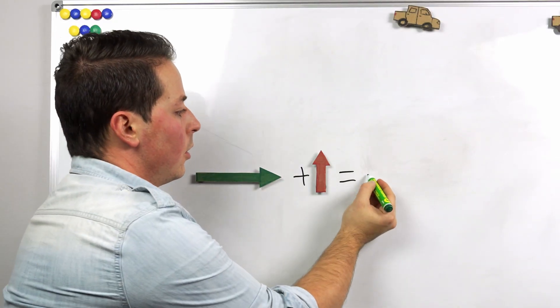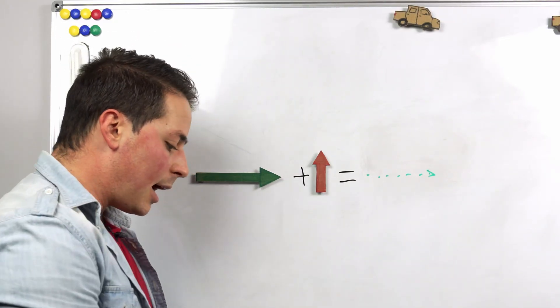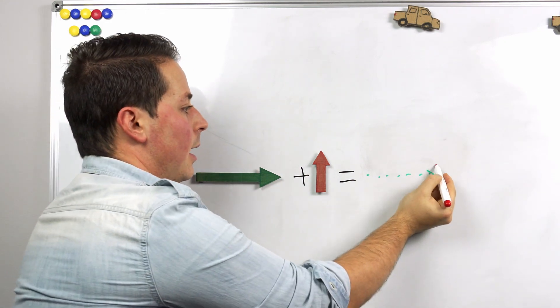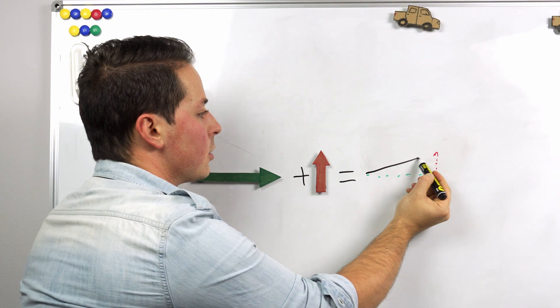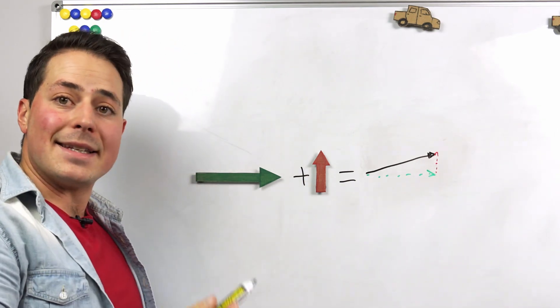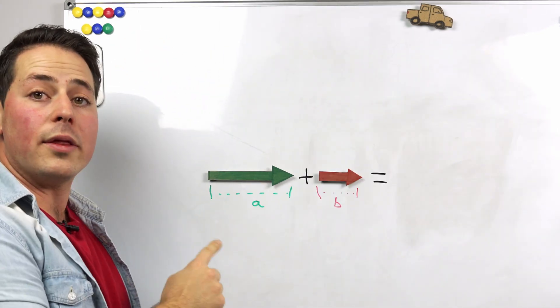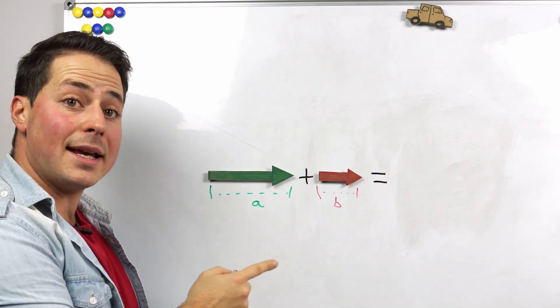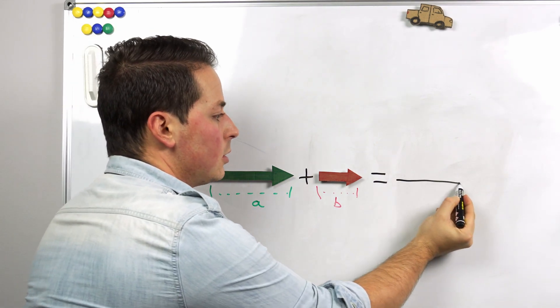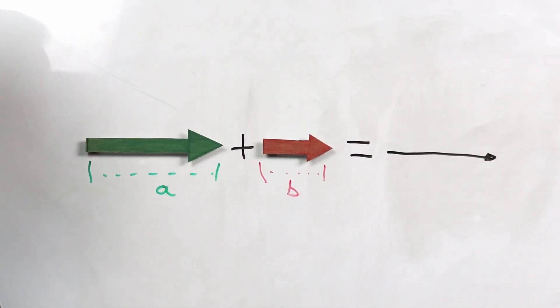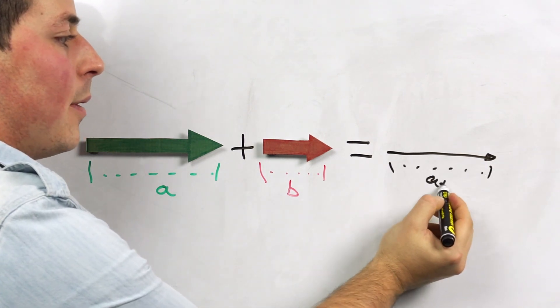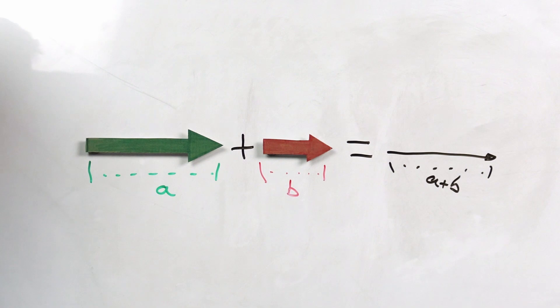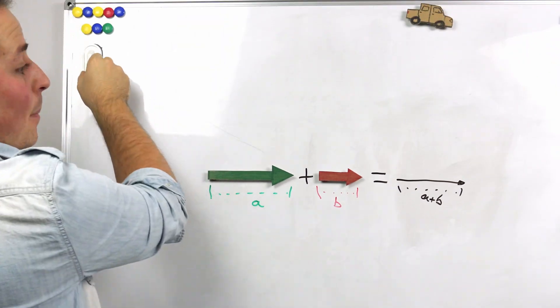When we sum two vectors, we put one after the other one and the resulting combination is another vector that is the sum of those two vectors. When the two vectors are pointing in the same direction, the result also points in the same direction and its magnitude is just the sum of the magnitudes of the vectors involved, as if they were just numbers.